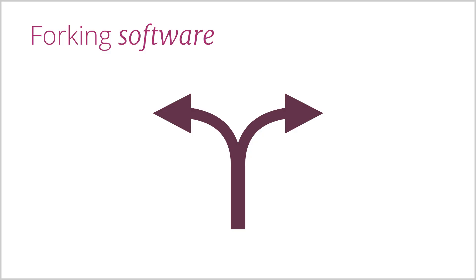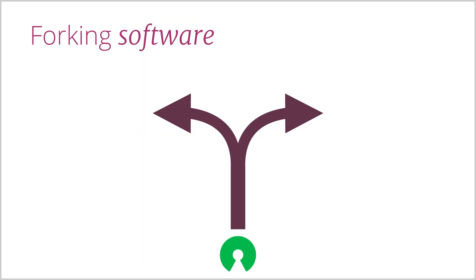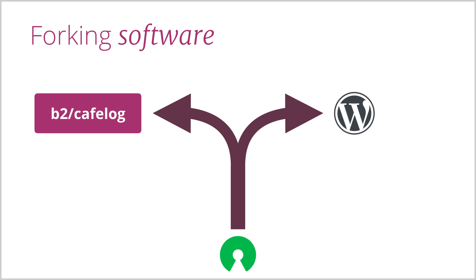I know what you may be thinking now — what is this software forking business? So let's pause the story for a second and see what it means. Software can be divided into branches that stem from the same root but go their separate ways, like a fork in the road. In open-source software, developers can take source code, copy it and create a totally different piece of software. That is how WordPress came to be, as a fork of B2CafeLog.